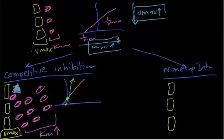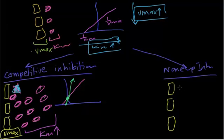In competitive inhibitors, KM increases because you increase the number of substrates, while Vmax remains the same because the enzyme number stays the same. The curve crosses at the same Vmax point.